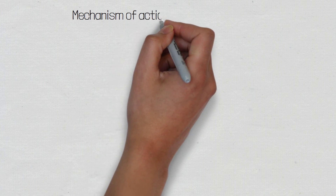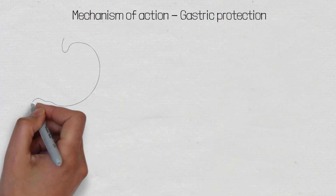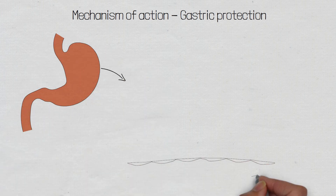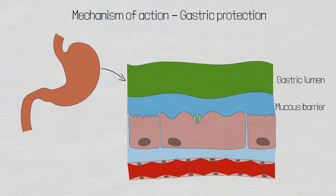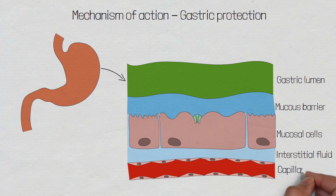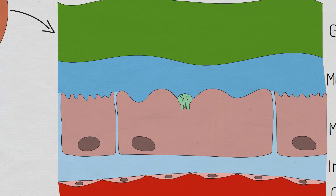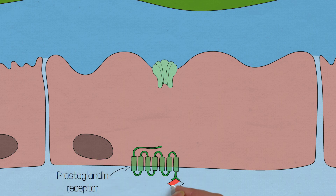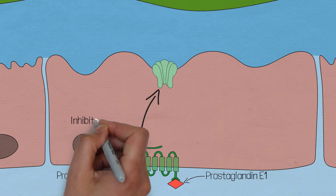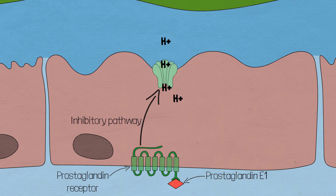Within the stomach, there are specialised cells called parietal cells, and these cells are responsible for secreting hydrogen and chloride ions, which combine to make hydrochloric acid within the stomach. The acidity of the stomach acid plays an important role in the activation of enzymes and the digestion of food. However, if there is an excessive amount of hydrogen ions being pumped into the stomach, it can cause damage to the stomach mucosa and lead to ulceration. Prostaglandin E1 binds to its target receptor on the parietal cells and initiates a G-protein inhibitory pathway, which reduces hydrogen ion secretion and regulates stomach acidity, preventing the pH from becoming too low and causing harm to the stomach lining.